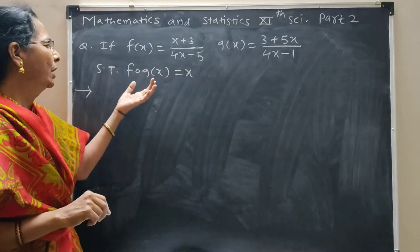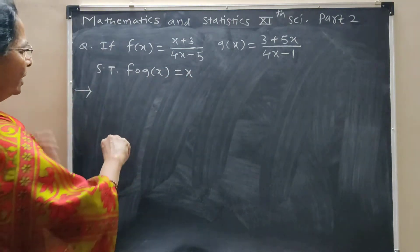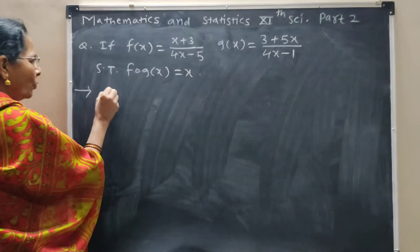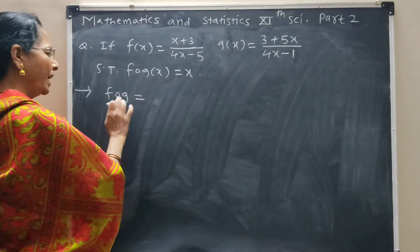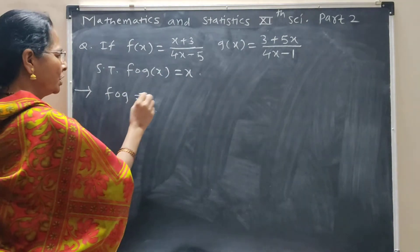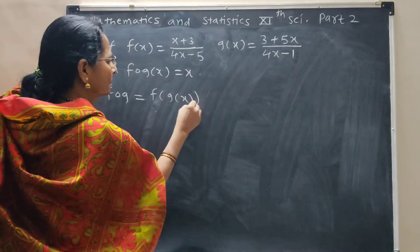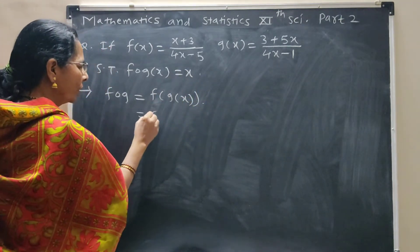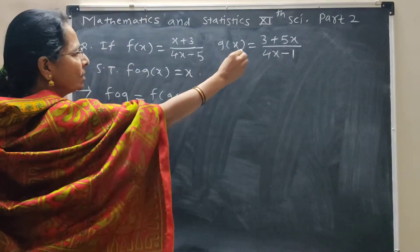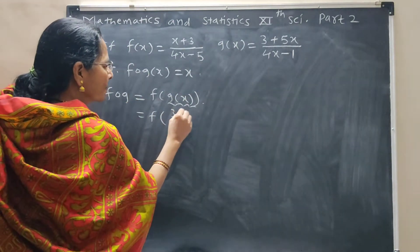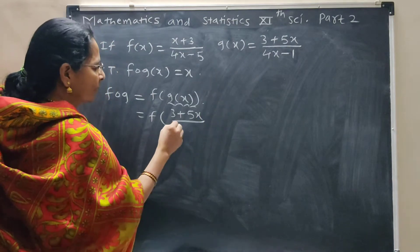We are going to show fog. fog of x is equal to f(g(x)), which means f applied for the value of g(x). g(x) is (3 plus 5x) upon (4x minus 1).